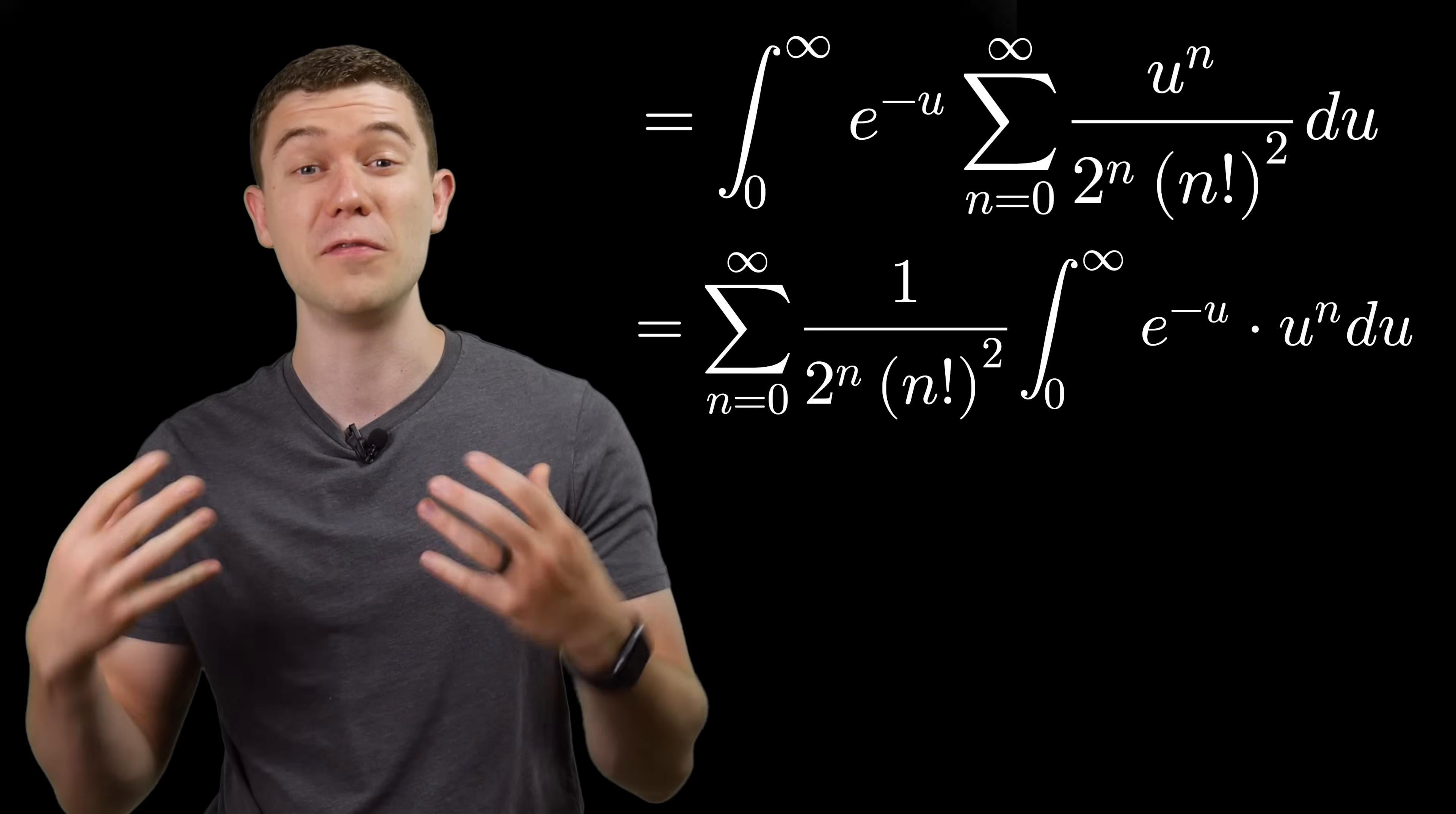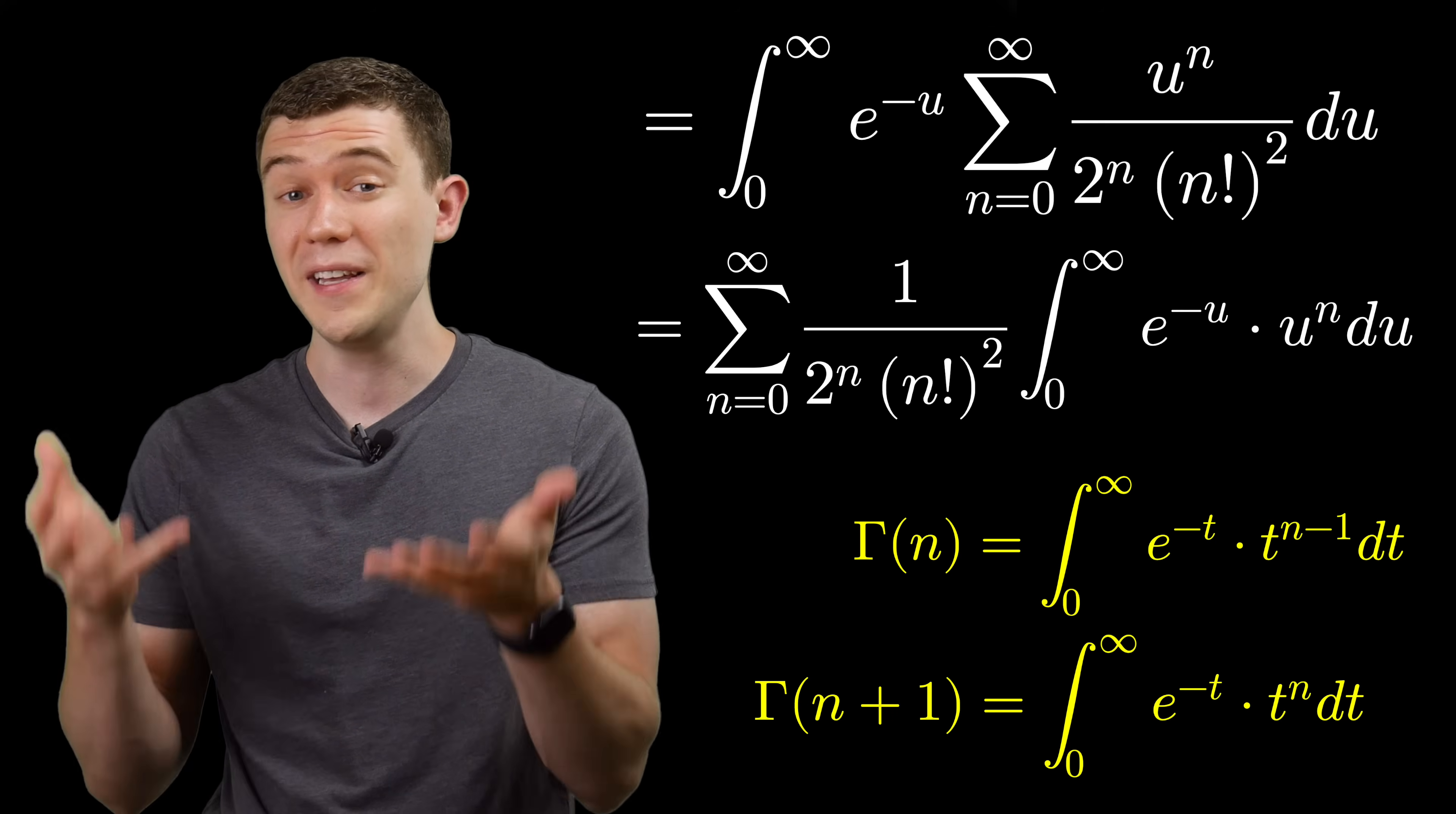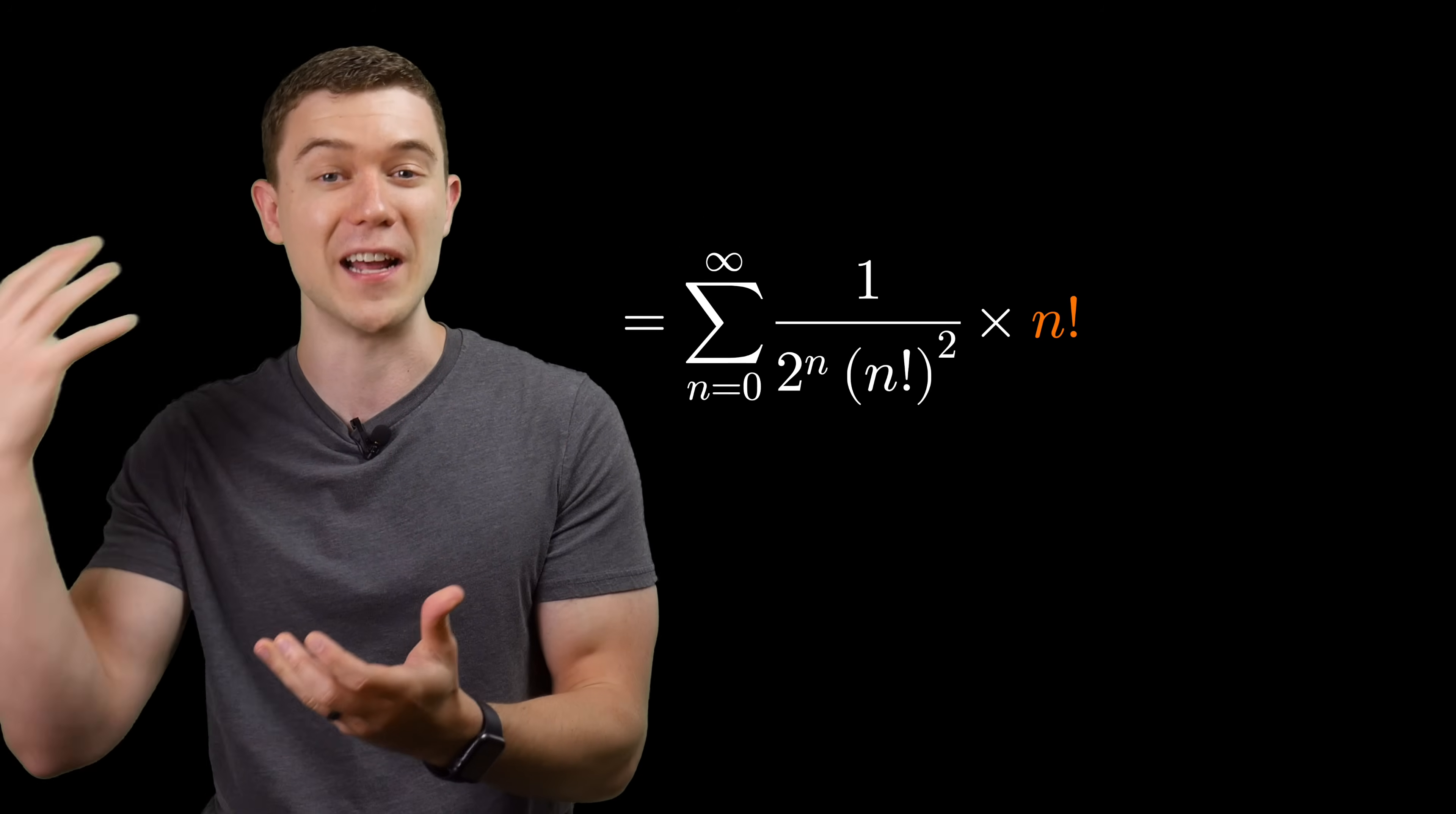This is a different representation for the gamma function. Typically, gamma of n is represented as this definite integral we have here, just with an n minus 1 instead of a single n like we have here. So really, this definite integral equals gamma of n plus 1, which is well known to be n factorial.